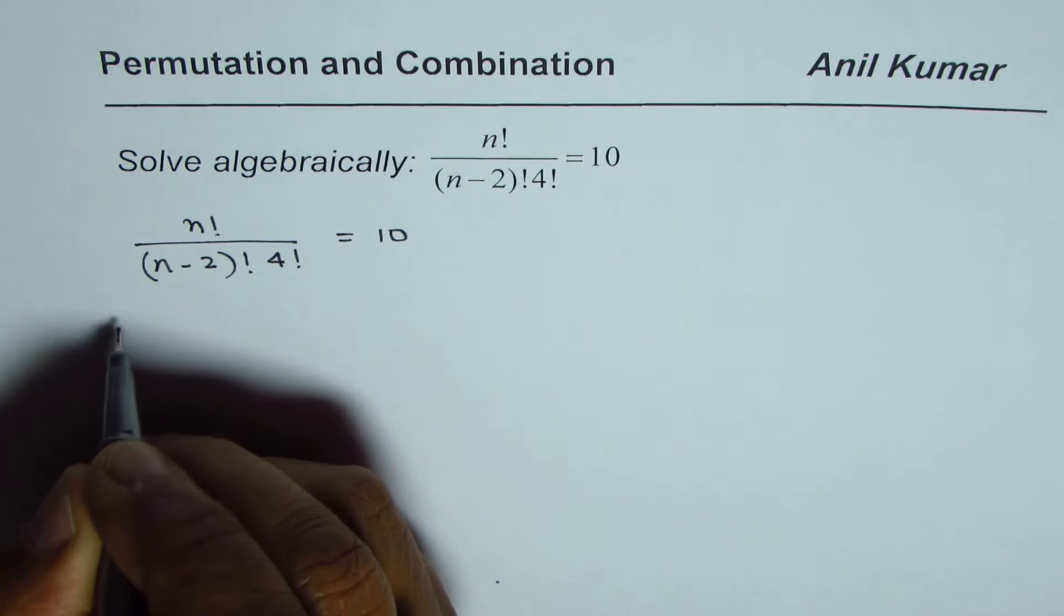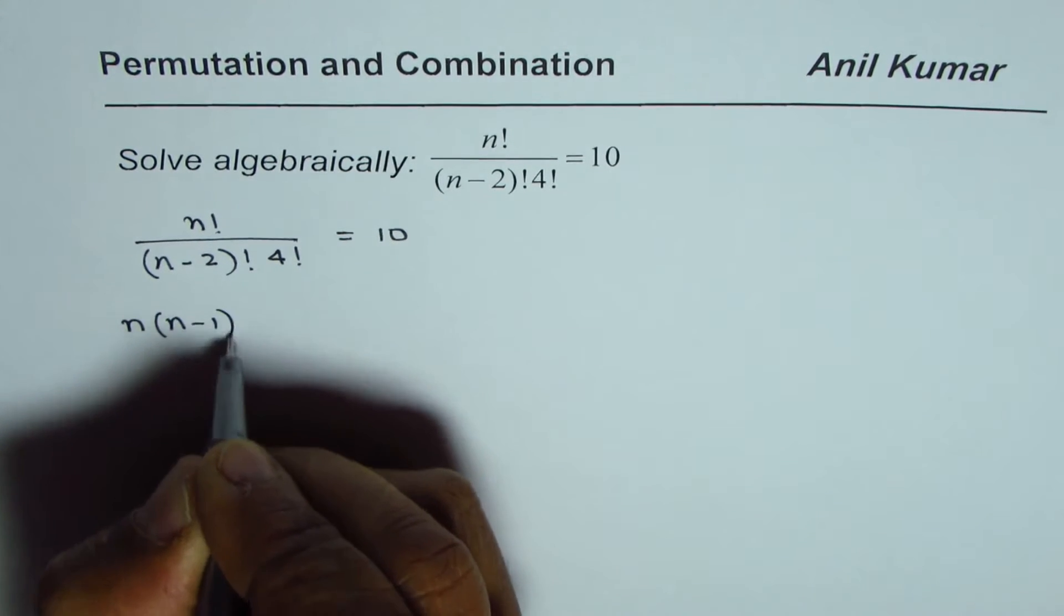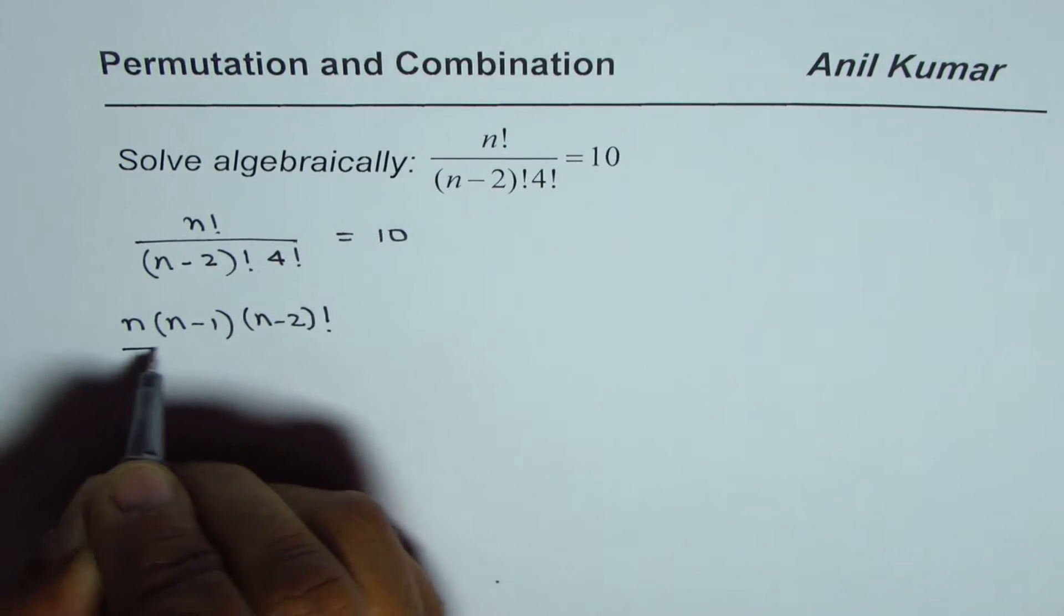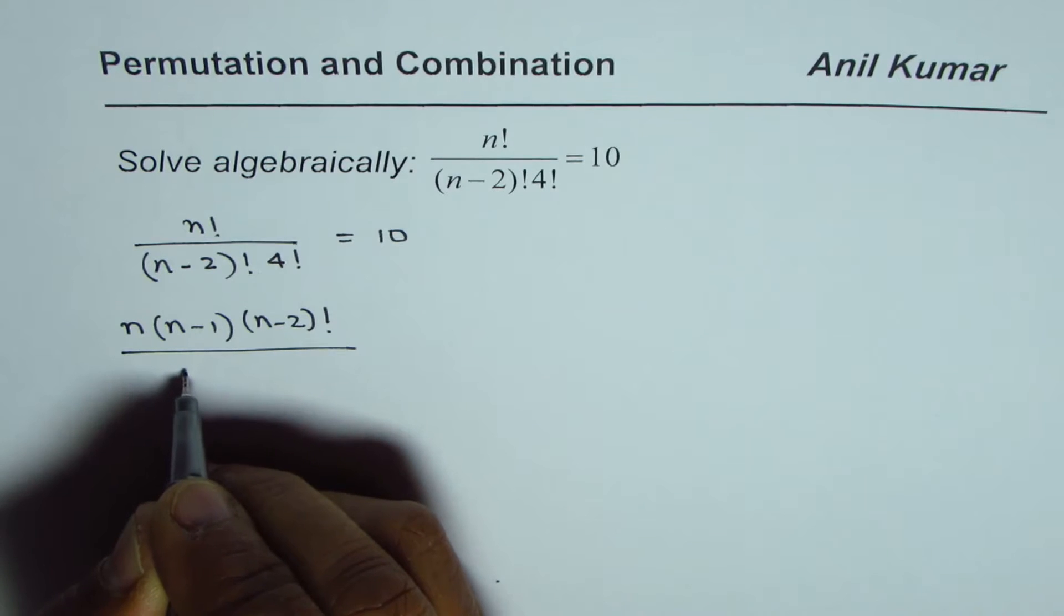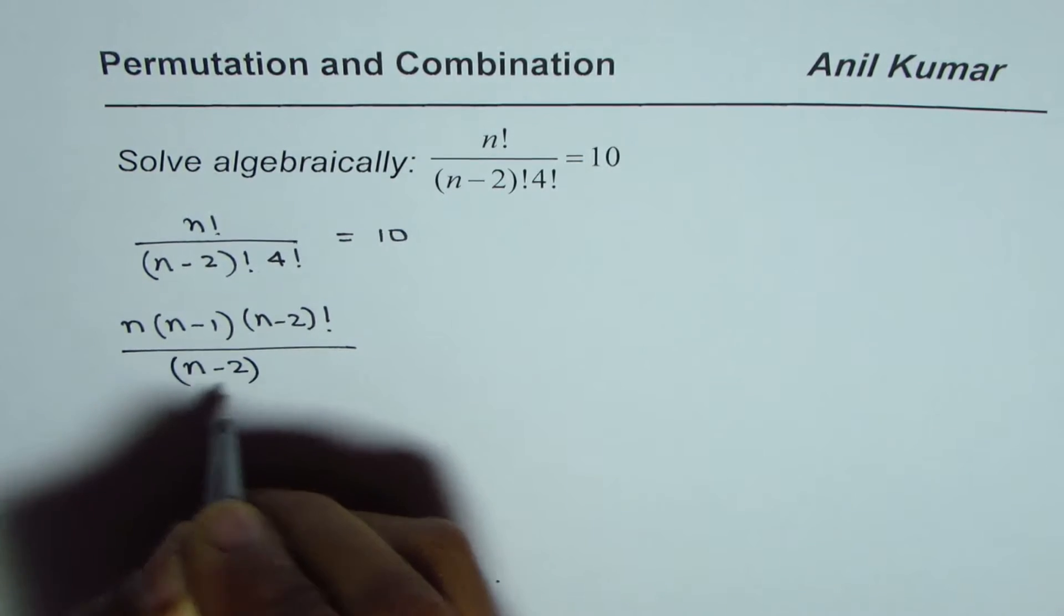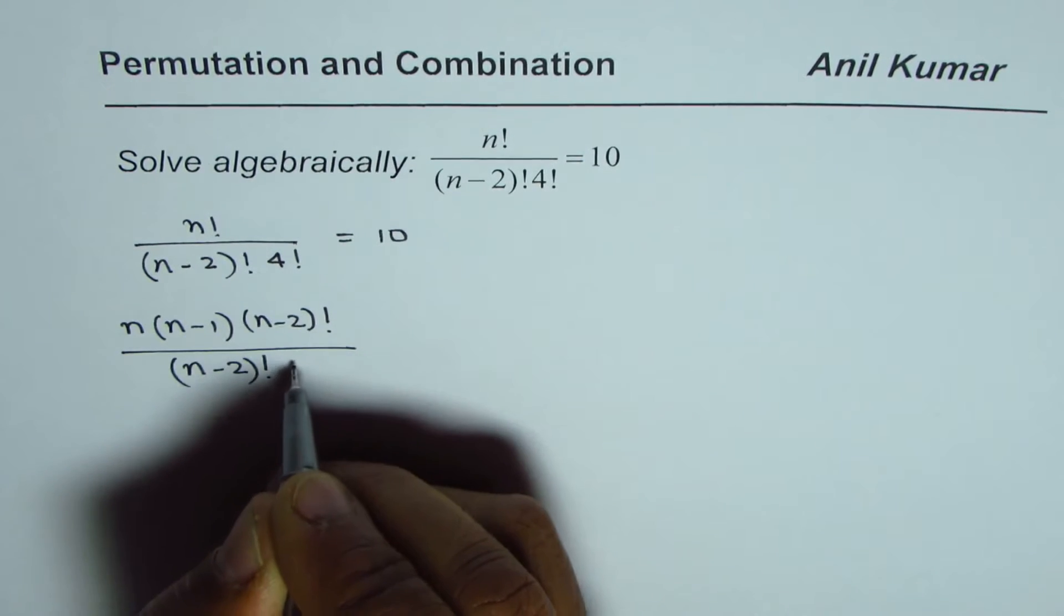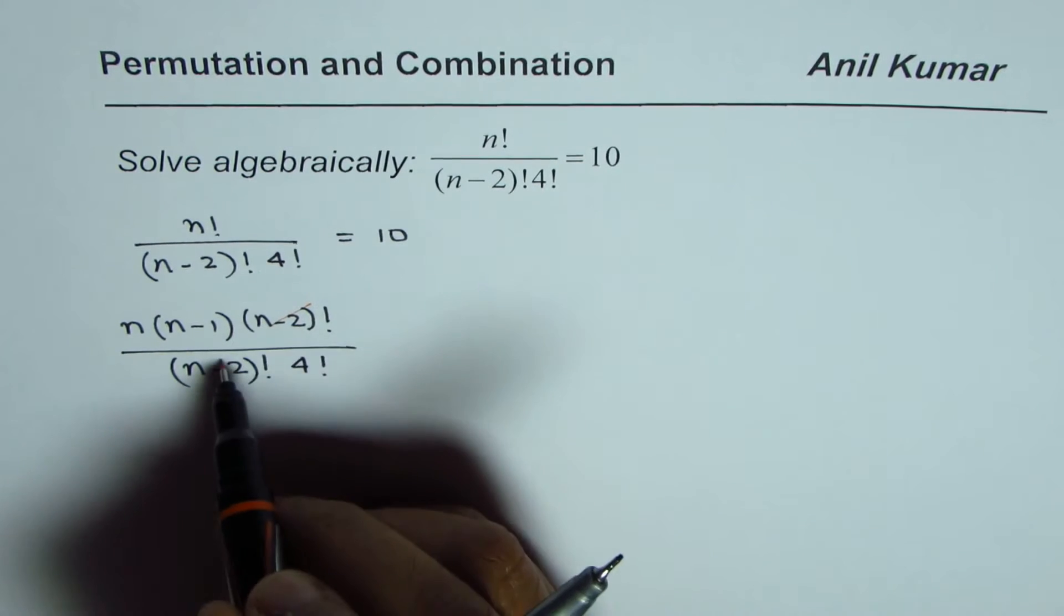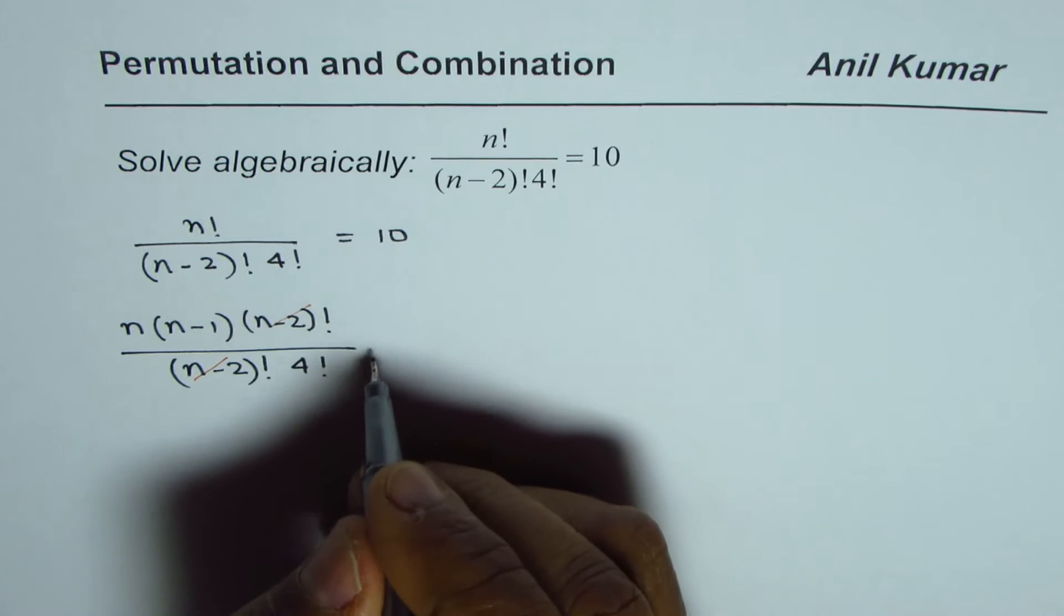Now n factorial can be written as n times n minus 1 times n minus 2 factorial and the denominator we have n minus 2 factorial times 4 factorial. Now n minus 2 factorial and n minus 2 factorial can be cancelled.